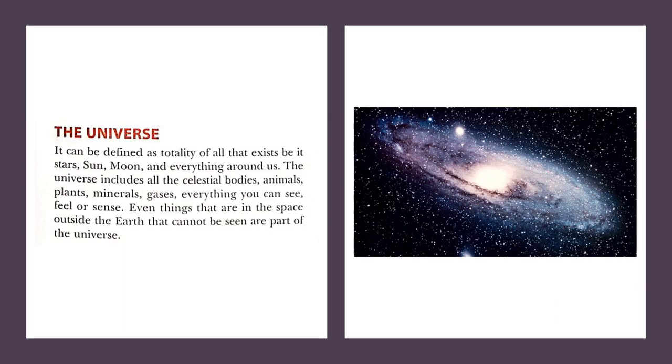Next we have universe. The universe can be defined as totality of all that exists, be it stars, sun, moon, and everything around us. So universe is everything that exists - stars, moons, planets, and everything. Everything all around which is existing is universe. The universe includes all the celestial bodies.